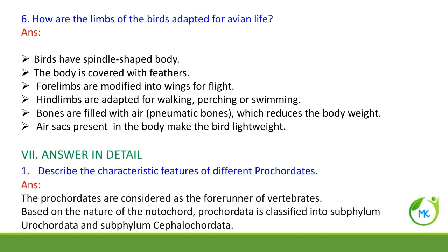How are the limbs of birds adapted for avian life? The birds have a spindle-shaped body covered by feathers. The forelimbs of birds are modified into wings. The hind limbs are adapted for walking, perching, or swimming — for example, grasping a branch. The bones of birds are air-filled; such bones are called pneumatic bones. Due to the presence of air-filled bones and air sacs, the body weight of the bird becomes light.